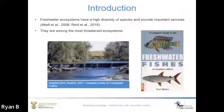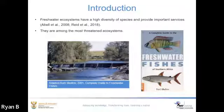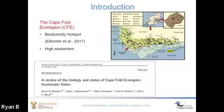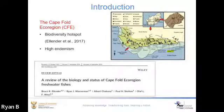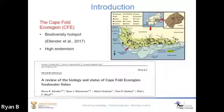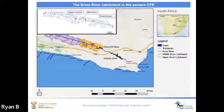Freshwater ecosystems have a high diversity of species and provide important ecosystem services, and they are among the most threatened ecosystems as a result of human activities. The Cape Fold Ecoregion in the southern tip of Africa is a biodiversity hotspot with relatively small and geographically isolated river systems. This region has received considerable research focus because of its high levels of biodiversity and high endemism for freshwater fishes, the majority of which are under severe threat of extinction. Streams within this region are subject to major human-induced changes including damming, excessive water abstraction, and the introduction of non-native fishes.